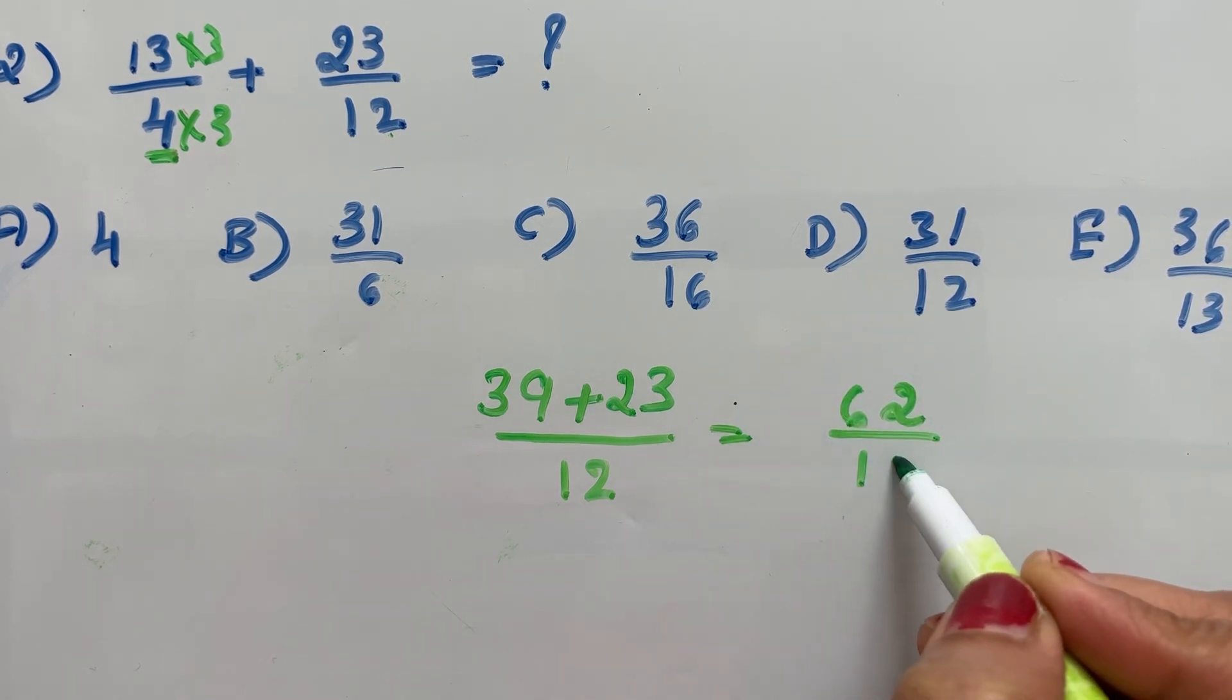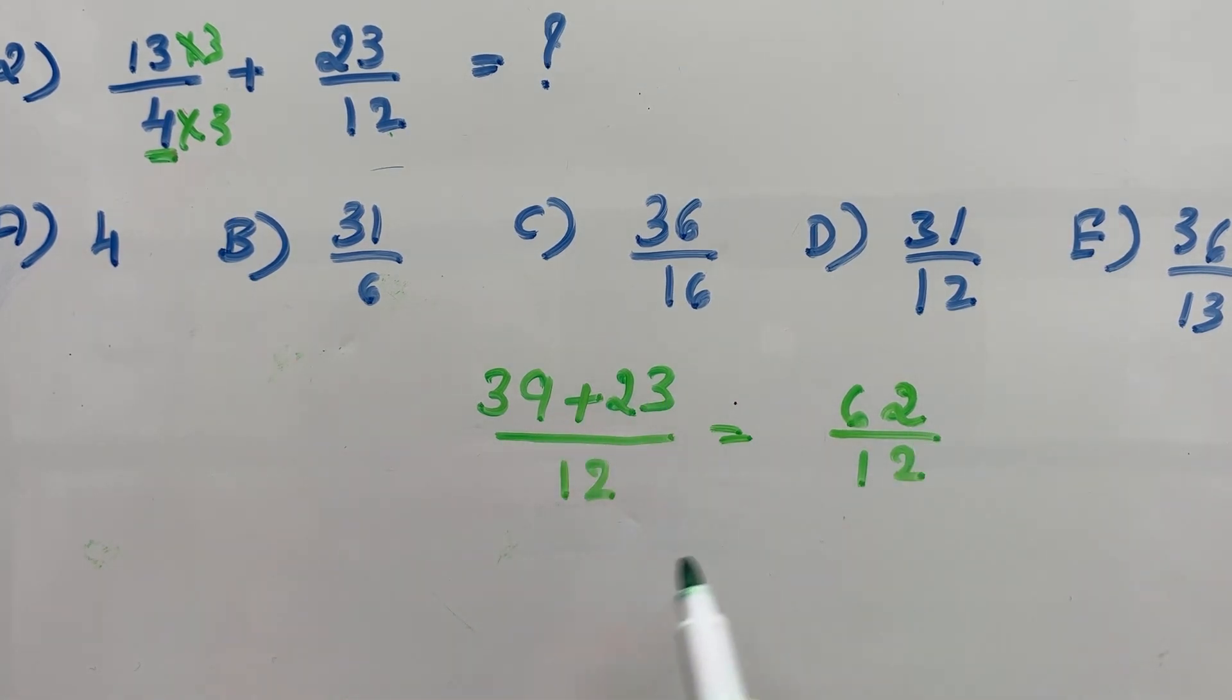62 over 12. 39 plus 23 is 62. 62 over 12.